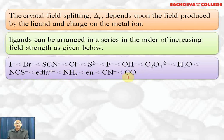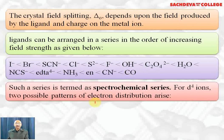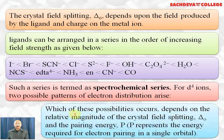Carbon monoxide is the strongest ligand as it can form both sigma and pi bonds with the metal. Such a series is termed the spectrochemical series. For d⁴ ions, two possible patterns of electron distribution arise; which one occurs depends upon the relative magnitude of the crystal field splitting energy Δo and the energy required for pairing of electrons P.